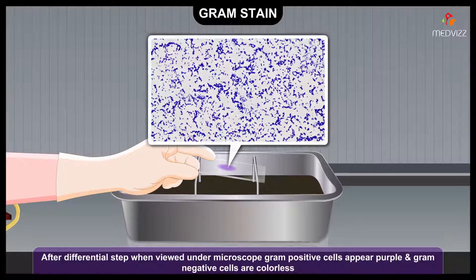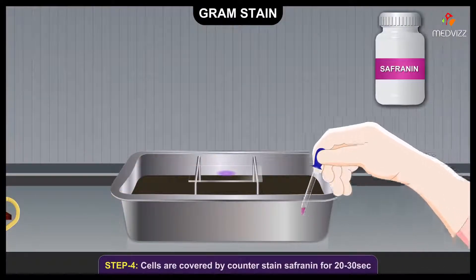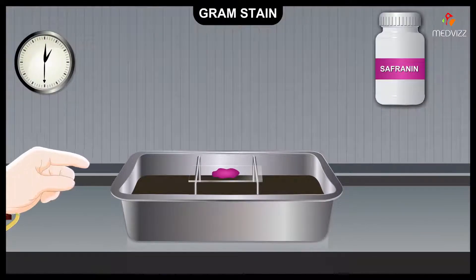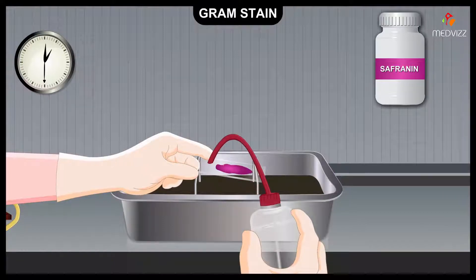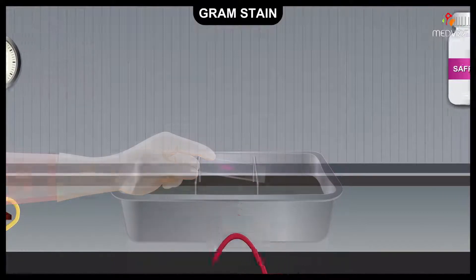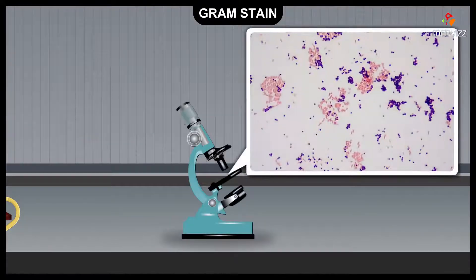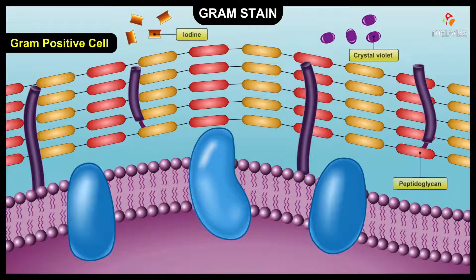Finally, the rinsed cells are covered with the counterstain safranin for 20 to 30 seconds, which stains the Gram negative bacteria pink. After rinsing with water, the slide is dried with filter paper. When viewed microscopically, the Gram positive bacteria are purple and the Gram negative bacteria are pink.